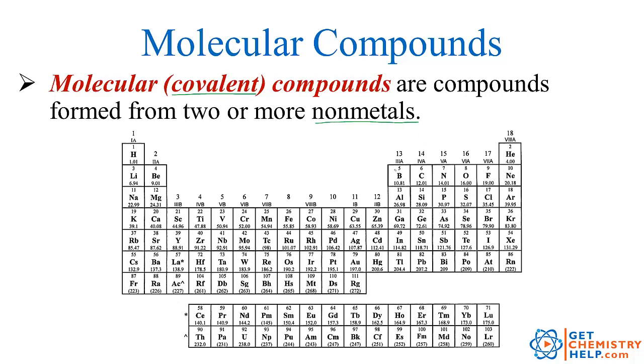Now if we look on our periodic table, there's a little staircase that runs right along here, and this is the dividing line between the metals on the left side and the non-metals over here in the top right quadrant.